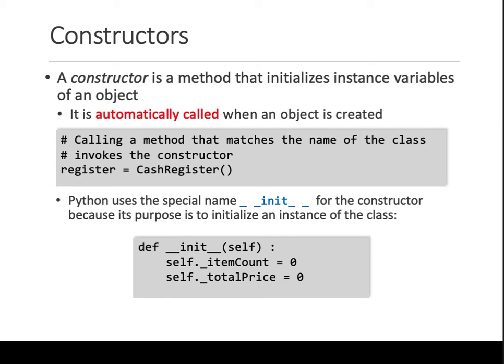The next thing is constructors. What is a constructor? A constructor is a method or a function that is automatically called when an object is created. Do we need to provide constructors for every class? No, we don't, but 99% of the time it's recommended that you do, because you have to initialize variables in almost every kind of class that you're going to create.